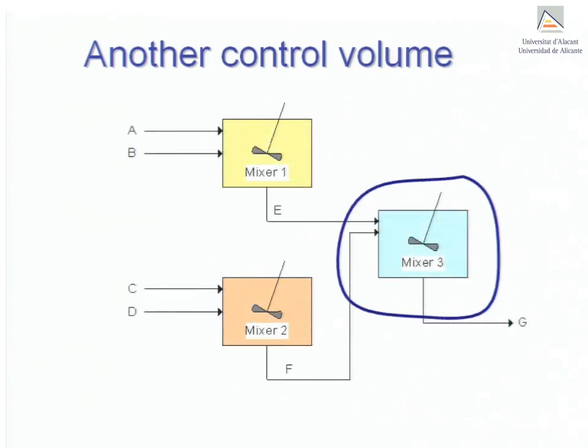In conclusion, we have seen that there are control volumes that contain only one process unit and then others that may contain several units or all of them. Once you have gained a certain familiarity with these diagrams, you won't have to use colored lines, but until then it would be advisable to do so.